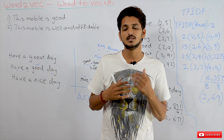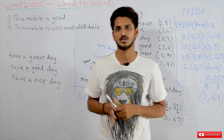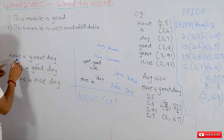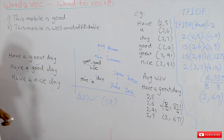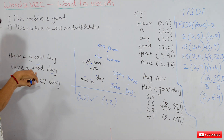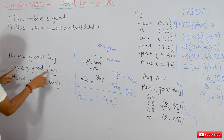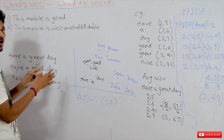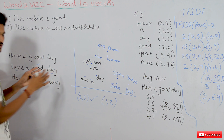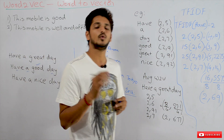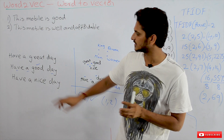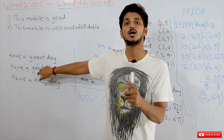But in Word2Vec we will consider the meaning of words as well. Let's check how. Take statements like 'have a great day,' 'have a good day,' 'have a nice day.' Take the word 'good' — it is found in the context 'have a day.' The words beside 'good' are considered the context words: 'have,' 'a,' and 'day.'